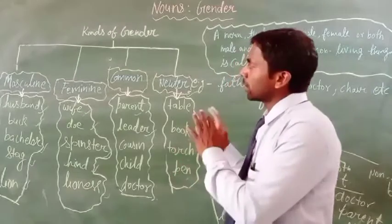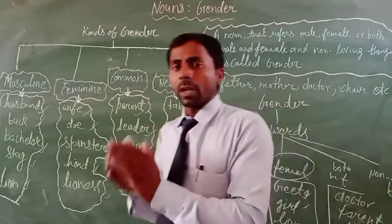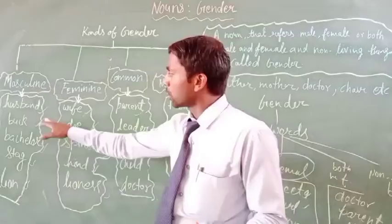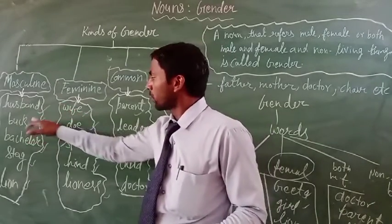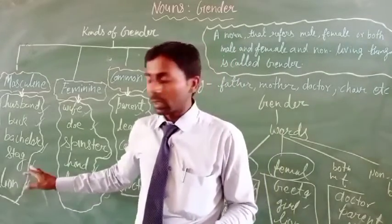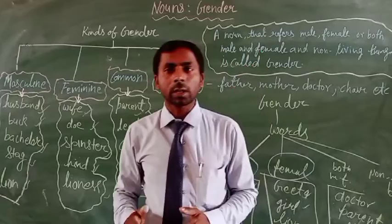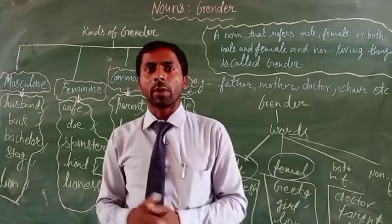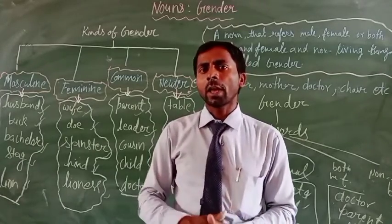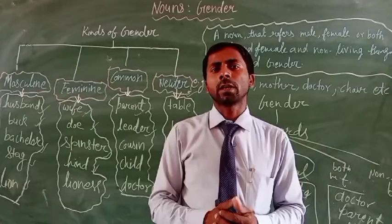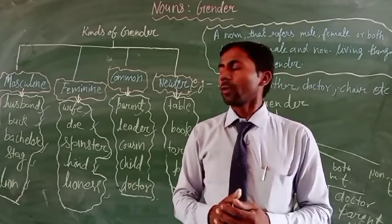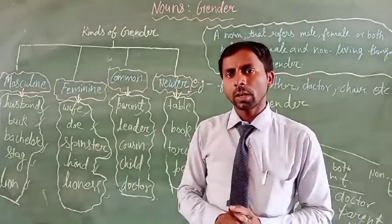We can also change masculine gender into feminine gender using opposite words. For example, the opposite of husband is wife, the opposite of bachelor is spinster, and the opposite of stag is hind. Words like lion, count, shepherd, and priest are masculine gender, and we can change them to feminine gender as lioness, countess, shepherdess, and priestess. So many masculine words can be converted into feminine gender.